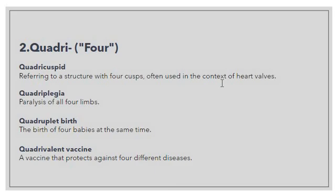Then we have 'quadruplet birth' — the birth of four babies at the same time. When a mother gives birth to four babies, we denote this with the prefix 'quad', giving us 'quadruplet birth'. Then we have 'quadrivalent vaccine' — a vaccine that protects against four diseases at the same time. We give one vaccine to a patient and it helps them fight against four diseases, so we use 'quadrivalent', where 'quadri' denotes four.